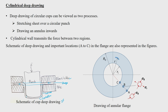It is all about converting a flange into your cup wall. The schematic shown here is a partially drawn cup — that is why you have a cup wall and a flange region. If you make the punch move down further, then the entire flange region will become a cup wall.